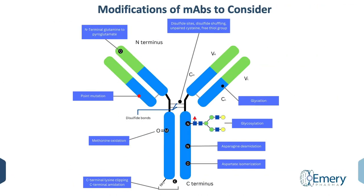On the next slide, common modifications found in monoclonal antibodies and other proteins are illustrated. The detailed modifications include oxidation, deamidation, glycosylation, and disulfide scrambling.